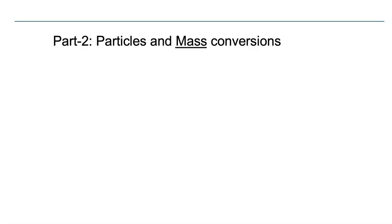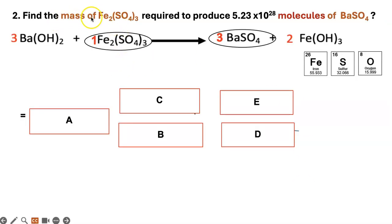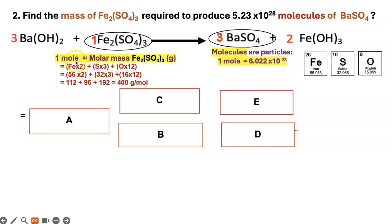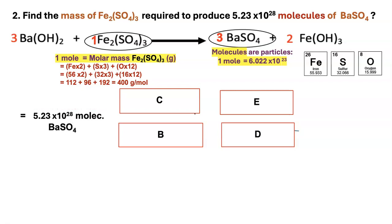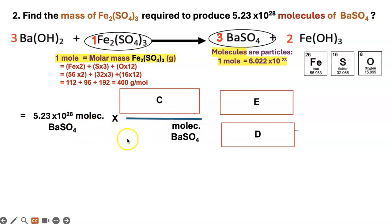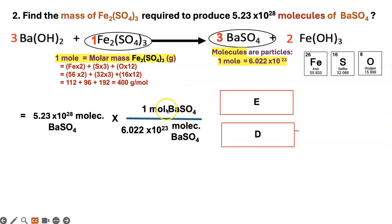Now let's look at a particles-and-mass conversion. Here you'll have an extra factor where molar mass equals one mole. You're asked to find the mass of FeSO₄ required to produce a given number of molecules of barium sulfate. Start with the given value. One mole equals Avogadro's number of molecules, and you will also use the molar mass equals one mole relationship. Calculate the molar mass of FeSO₄, then put the given unit in the denominator with 6.022 × 10²³ equal to 1 mole of barium sulfate.